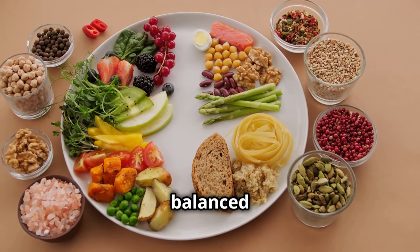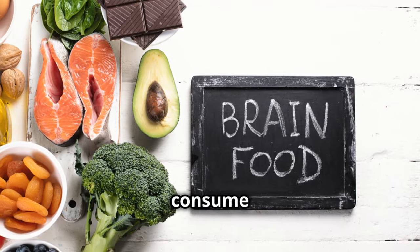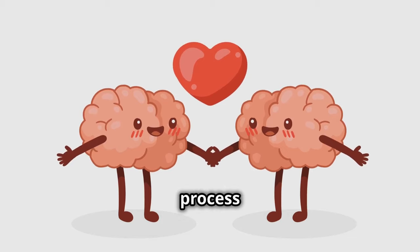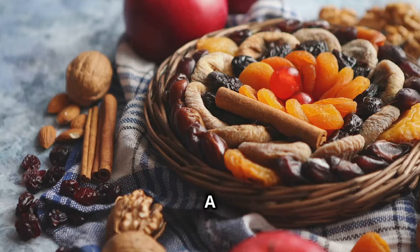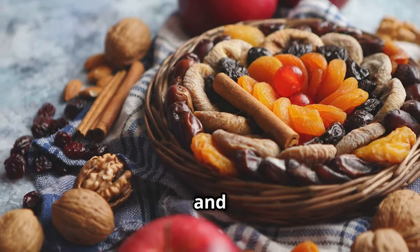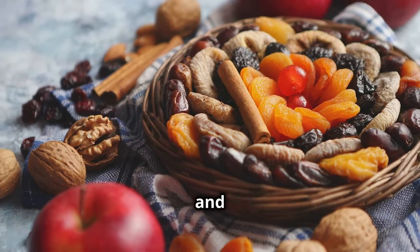Just as our bodies need a balanced diet to function properly, so too does our brain. The food we consume provides the building blocks and energy necessary for optimal brain health, including the process of neurogenesis. A diet rich in fruits, vegetables, whole grains, lean protein, and healthy fats can provide the essential nutrients that support neurogenesis and cognitive function.